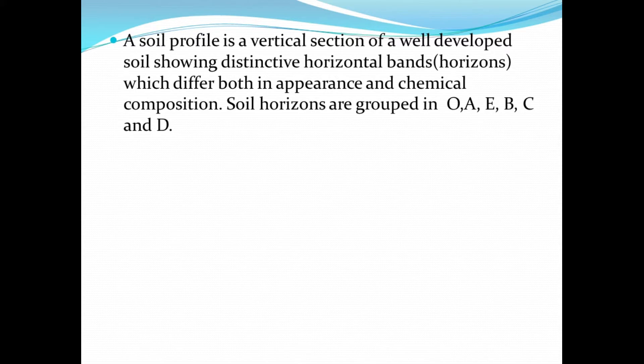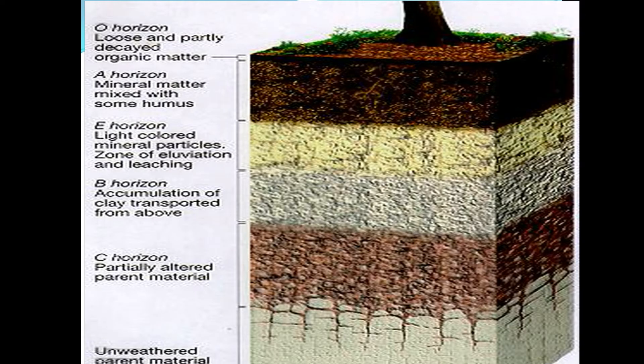Soil horizons are grouped into the O horizon, the A horizon, the E horizon, the B horizon and the D horizon. This is the diagram that is showing the soil profile.